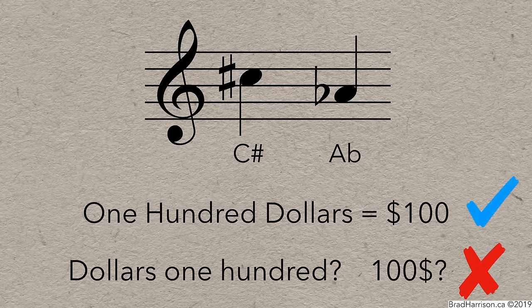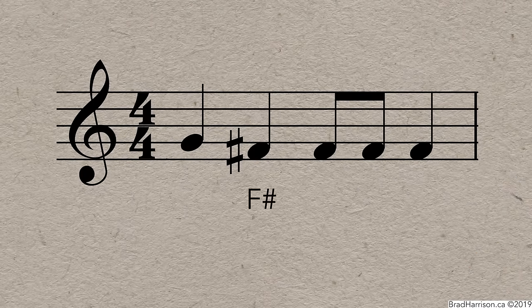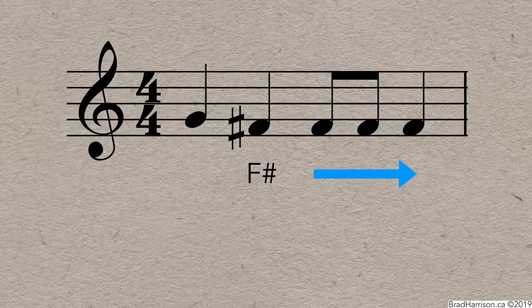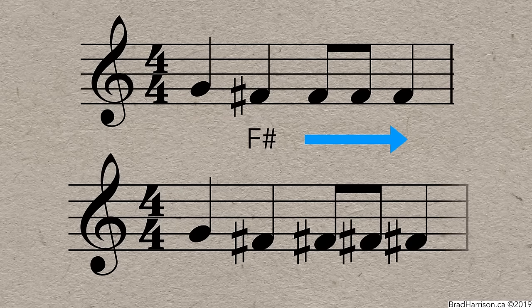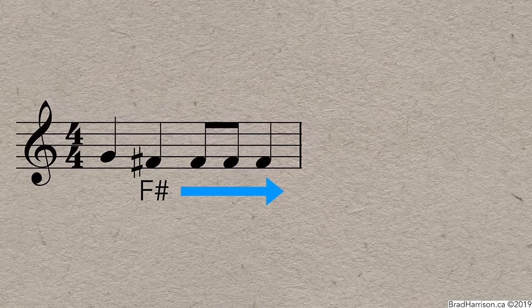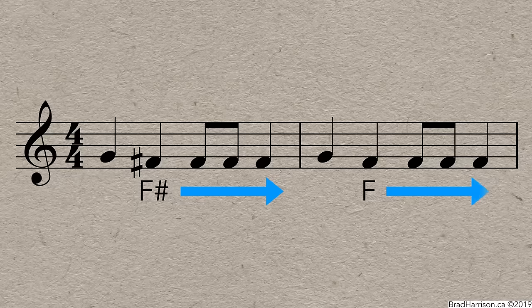Another important rule is that accidentals last for the whole bar. So, if you have an F sharp here, any F for the rest of the bar is also sharp. It's a lot easier to read this, knowing that all the Fs are sharp, rather than this, which is way more cluttered. When we get to the bar line, any accidentals that were in the previous bar no longer apply. So the Fs are sharp in the first bar, but in the second bar, they're just regular F.